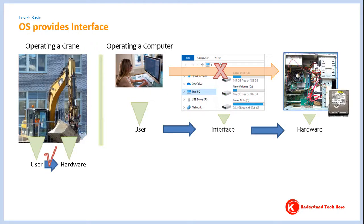Putting documents in a hard disk is just one example. Think of all the different things you do in a computer — to do almost all of those things, in the middle you have got an interface. You click on the interface and that causes actions to occur. But who provides all these interfaces? It is the operating system that provides all these interfaces. Think about what happens if the OS does not provide an interface — if the OS does not provide these icons, how would you see what's in your pen drive?